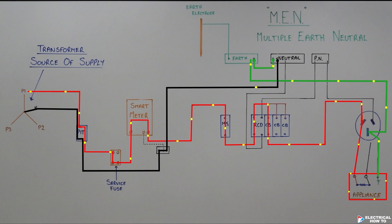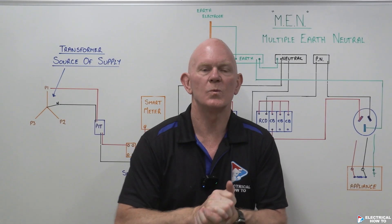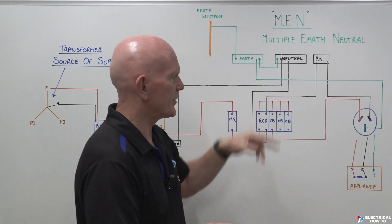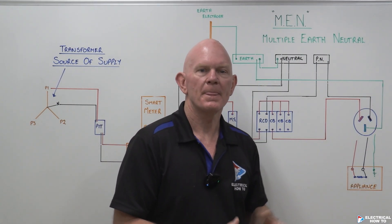Through the MEN link, back in the underground, through the pit, and will make its way back to the source of supply via this MEN as quick as possible. But why? Why do we want it to go back? Why do we want to create another path for current to flow when there's a fault?